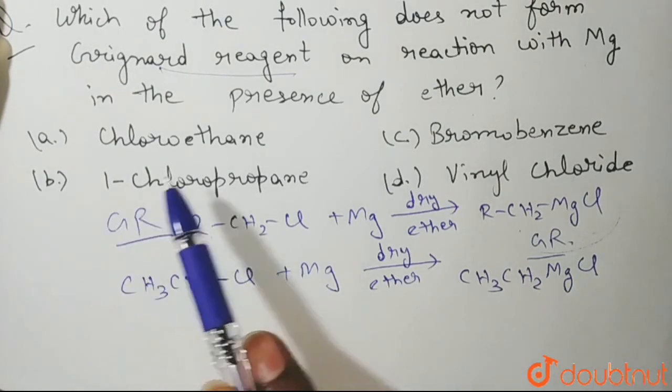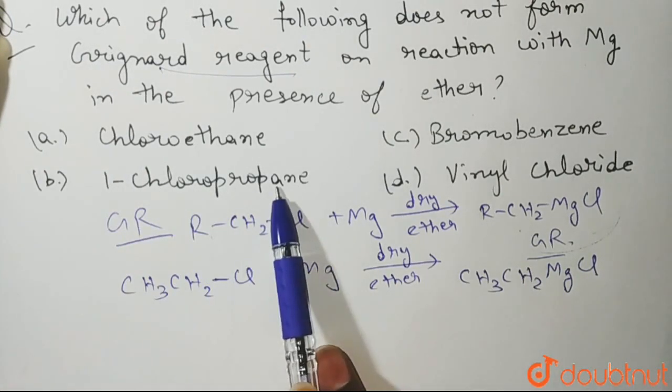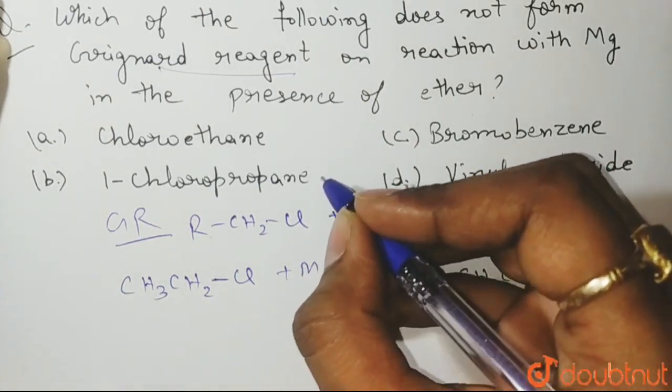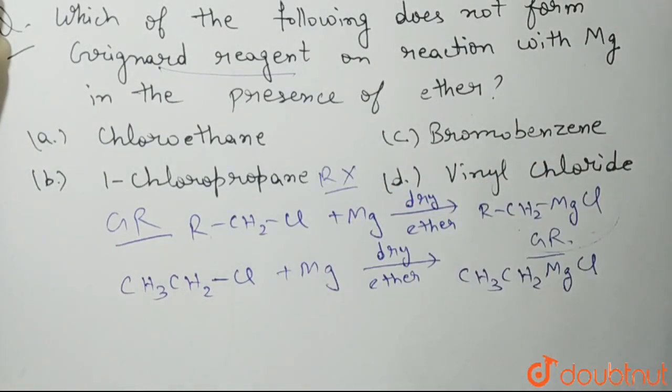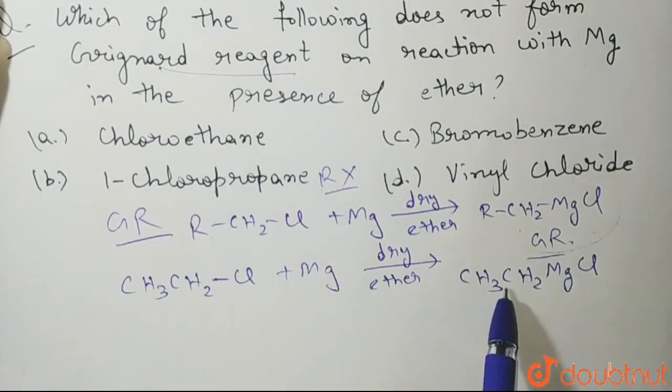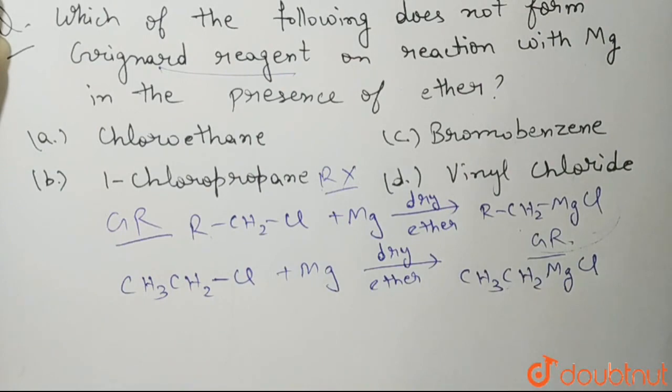Now again, if you see option B, that is 1-chloropropane, that is also a haloalkane. It is an RX—a haloalkane, where R is an alkyl group. That is here, it is propane and X is your chloro group. It can also form Grignard reagent.